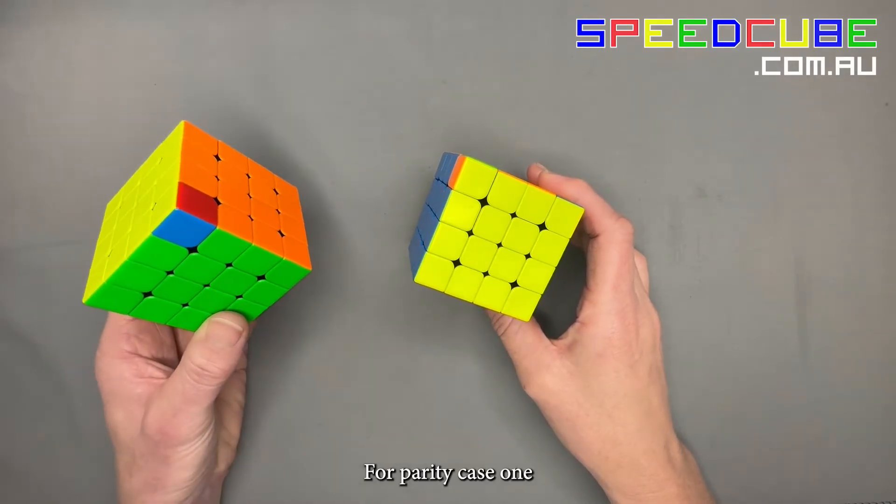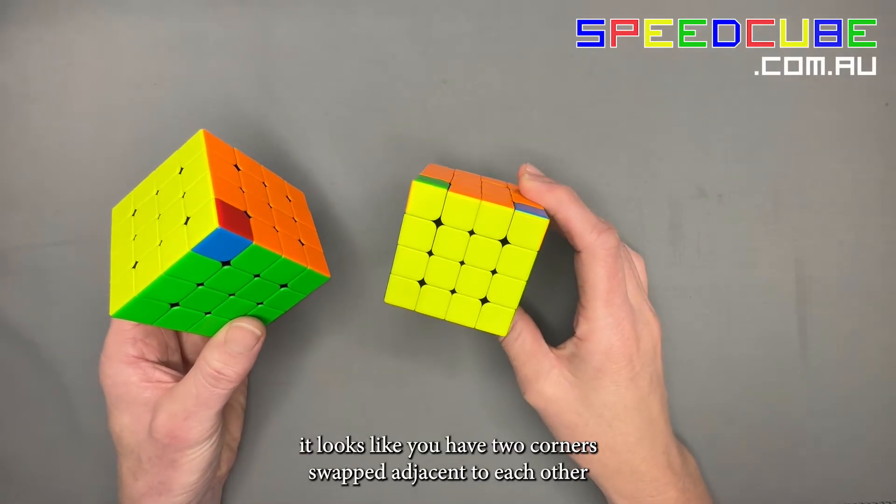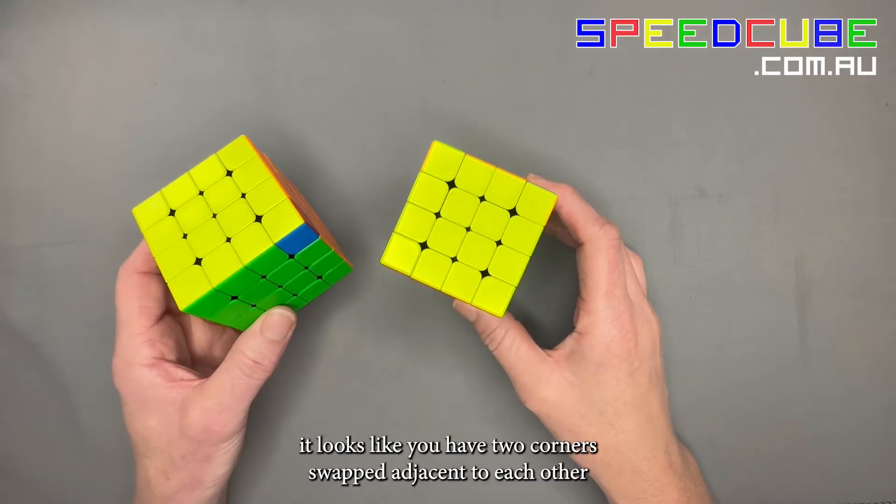For parity case 1, it looks like you have two corners swapped adjacent to each other.